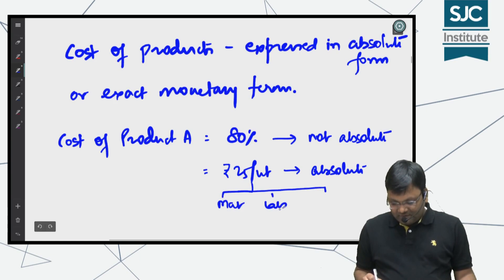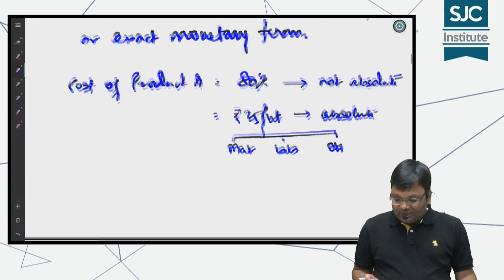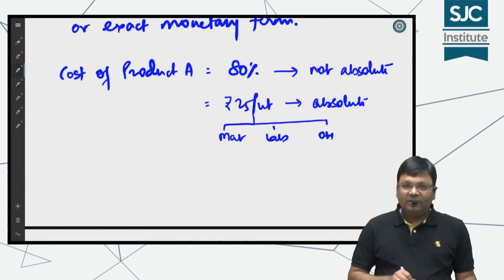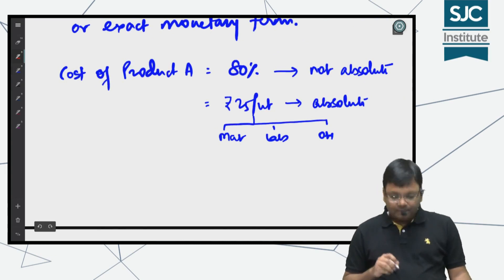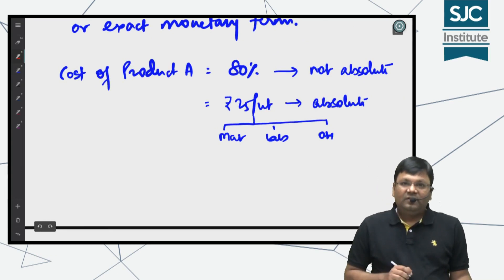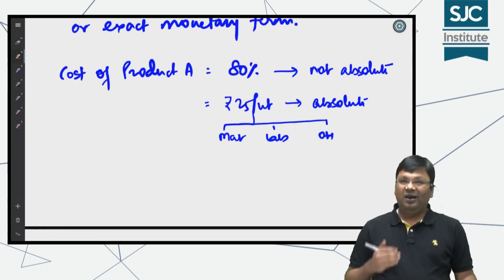It's better that you always consider absolute form for future decision making. Another advantage of absolute cost is that you understand how much you are earning from the product.